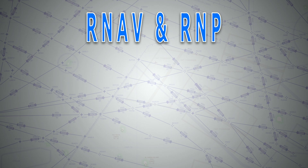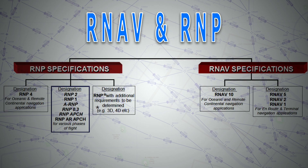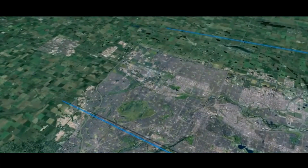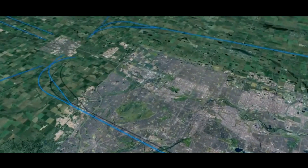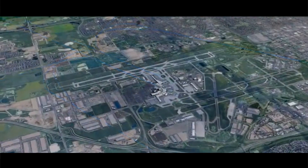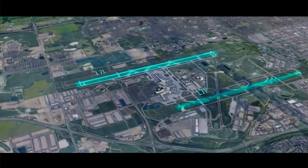For better understanding, it wouldn't hurt if we start by shedding light on what's the difference between RNAV and RNP. RNAV and RNP navigation specifications are substantially very similar. They only differ in the relationship to the performance monitoring and alerting requirement, which applies to RNP navigation specifications. This means that if the RNP system does not perform the way it should, then an alert should be provided to the flight crew. In practical terms, this means that air traffic control can have greater confidence in the track-keeping performance of the aircraft.